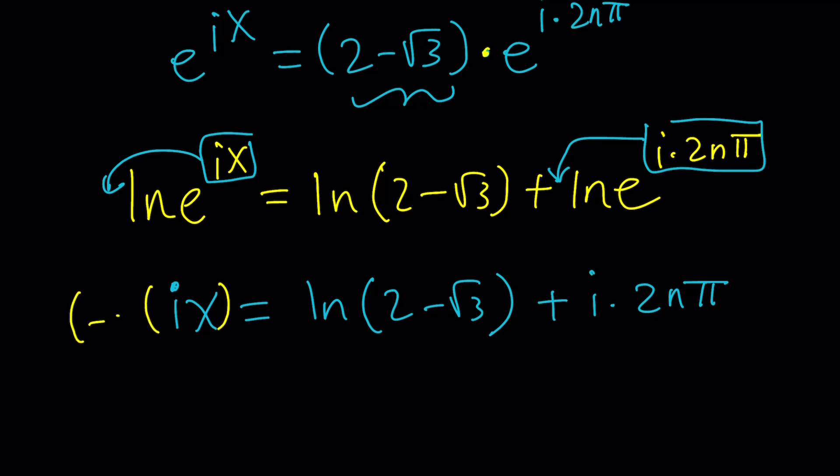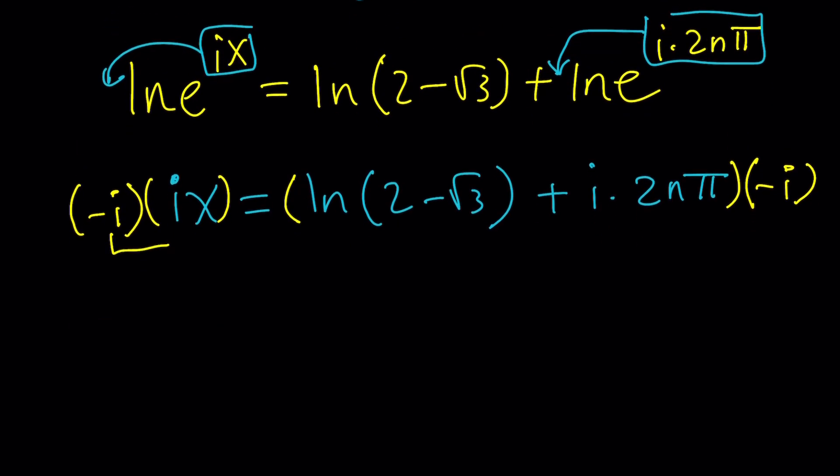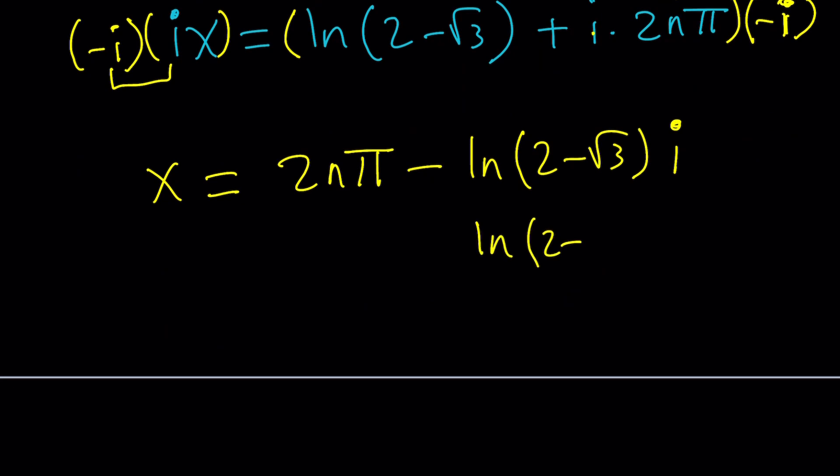You could divide by i, but I'll multiply both sides by negative i. Because negative i times i is negative i squared, which is going to give me 1. So that gives me x automatically. I'm getting negative i squared, which is 1. So I can start with 2n pi. That's going to be my real part. And then when I distribute this over that, minus ln 2 minus root 3i. We can write this as x equals 2n pi plus ln 2 plus root 3 i.